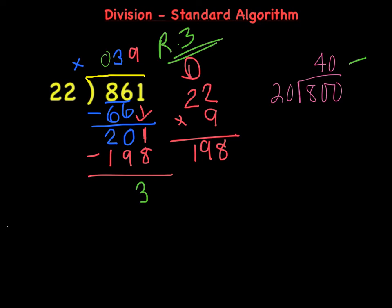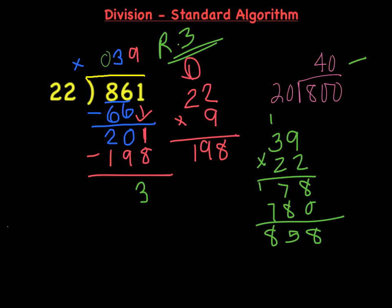So to see if it is exactly correct, I'm going to do my 39 times 22, and that's 18, 18, 7, and then I have the same thing again, and I get 858, but it says 861. So what's the difference there? Well, the difference is 3, and that's where I add in that remainder, the number that we didn't give out, and that gives me 861.